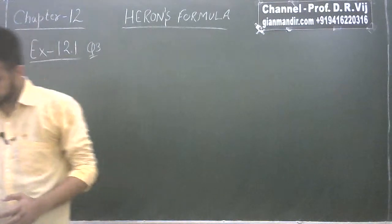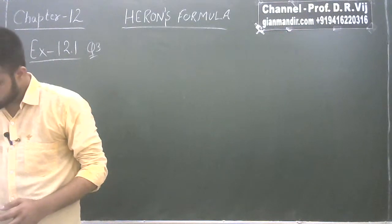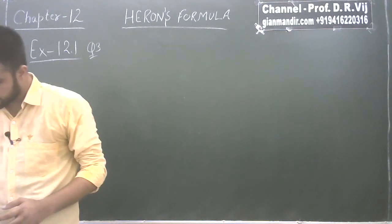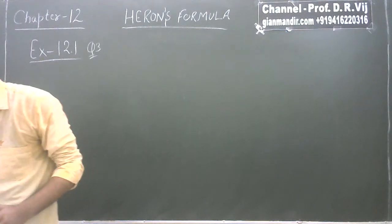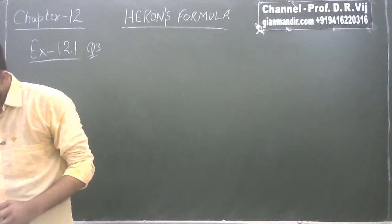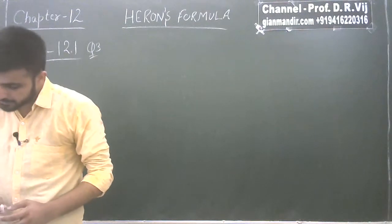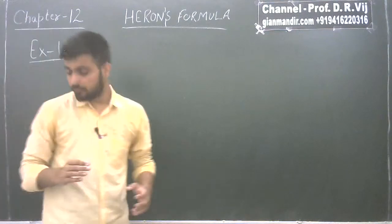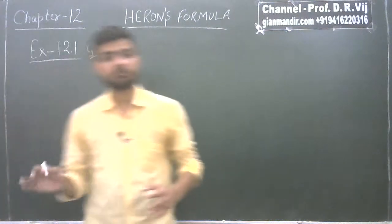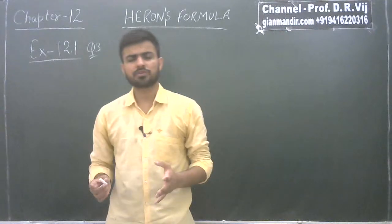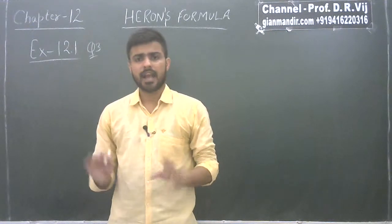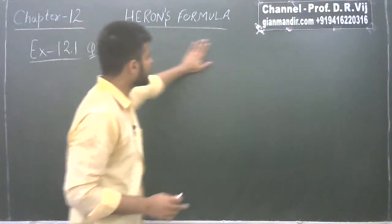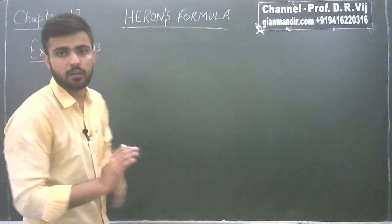The 3rd question says that there is a slide in a park. One of its side walls has been painted in some color with a message 'Keep the park green and clean', as shown in figure 12.10. If the sides of the wall are 15 meter, 11 meter, and 6 meter, find the area painted in color. It is given that there is a triangular slide and one portion of that slide is painted in color. We have to find that area, and the dimensions of the triangular slide are also given.